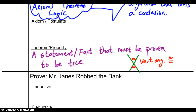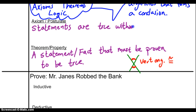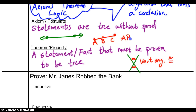On the other hand, we have things called axioms or postulates. Axioms or postulates are statements that are true without proof. We've already talked about some axioms in class. For example, the fact that two points make a line is an axiom. Or, if we have a line with points A, B, and C, we can say that AB plus BC equals AC. That's an axiom — we don't have to prove those facts, they're just there.